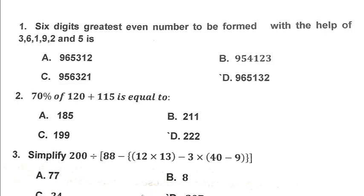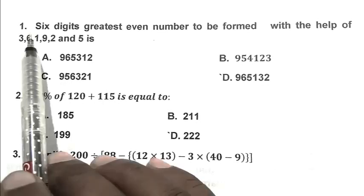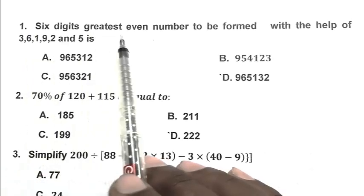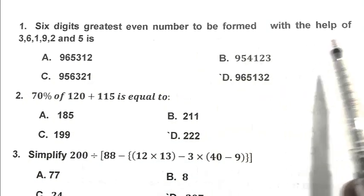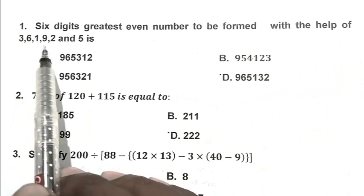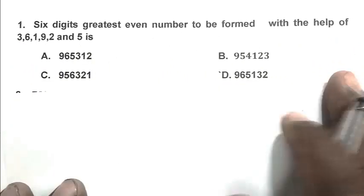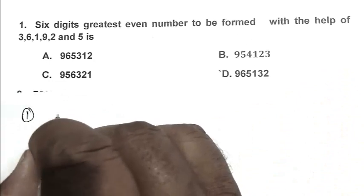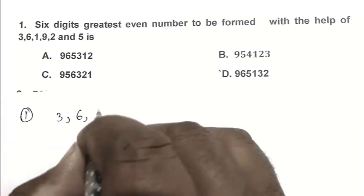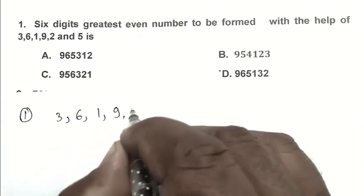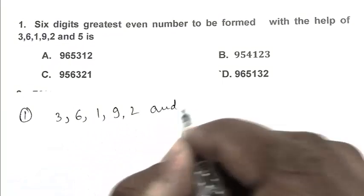Let's start and before we start, don't forget to subscribe my channel. Question number 1: Six digit greatest even number to be formed with the help of 3, 6, 1, 9, 2 and 5. The numbers are 3, 6, 1, 9, 2 and 5.